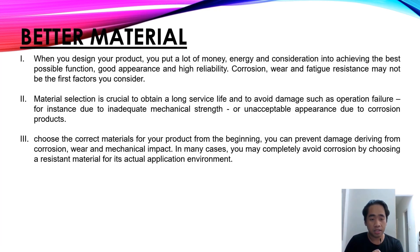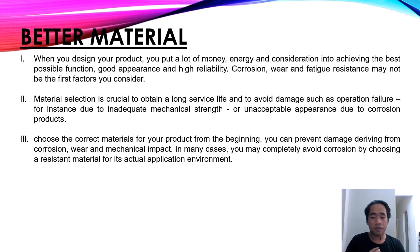The second prevention method is using better materials. When you design your product, you put money, energy, and effort into achieving the best possible function — good appearance and high reliability. Corrosion, wear, and fatigue resistance may not be the first factors you consider, but material selection is crucial to obtain a long service life and avoid damage such as operational failure due to inadequate mechanical strength, or unacceptable appearance due to corrosion products. Choose the correct material for your product from the beginning, and you can prevent damage from corrosion, wear, and mechanical impact.